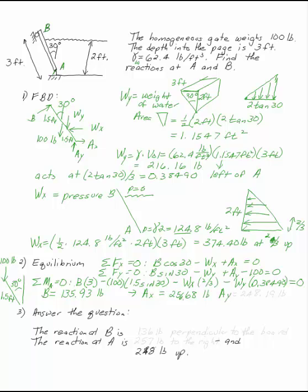Go back and make sure you've answered the actual question. They're asking you for the reactions at A and B. The reaction at B is 136 pounds, perpendicular to the board. And the reactions at A are 257 pounds to the right and 248 pounds up.